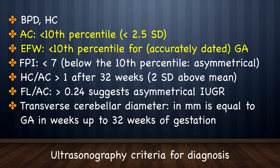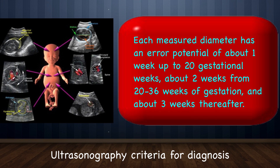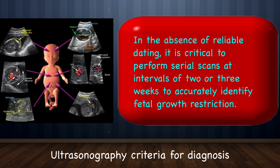Ultrasonography criteria for diagnosis of IUGR are shown here. Abdominal circumference and estimated fetal weight are the most accurate ultrasound parameters for diagnosis, whereas femur length-to-abdominal circumference ratio and placental grade 3 have the lowest positive predictive value. Note that each measured diameter has an error potential of about 2mm. In the absence of reliable dating, it is critical to perform serial scans at intervals of two to three weeks to accurately identify fetal growth restriction.